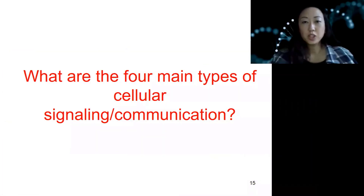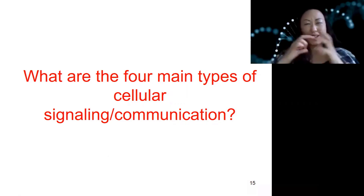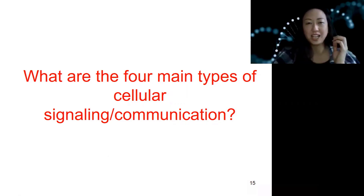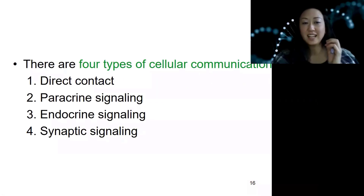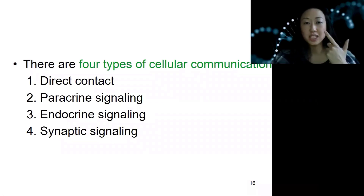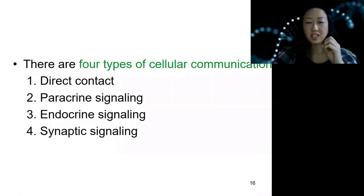Now we're going to introduce four main types of cell signaling, or how cells actually communicate. The four types are called direct contact, paracrine, endocrine, and synaptic signaling.